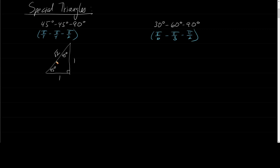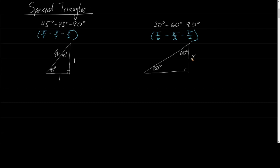For the 30-60-90 triangle, this angle is 30 degrees and this one is 60 degrees. If the side across from the 30-degree angle is x, the hypotenuse is 2x and the adjacent side is x√3. If I let x equal 1, we get sides 1, 2, and √3.